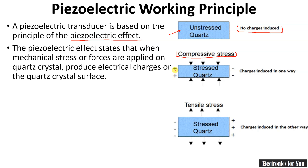When a compressive force is applied, some EMF will be produced — you can see the output is positive on one side and negative on the other. When tensile stress is applied, trying to increase the crystal's length, the charge output is in exactly the opposite direction: negative charges appear on the other side, so charges are induced in reverse.